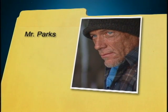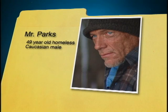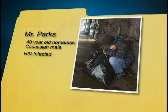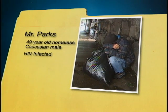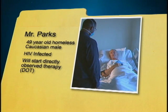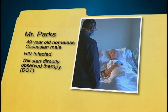Walter was assigned two new cases. Mr. Parks is a 49-year-old homeless Caucasian man who was identified just two days ago. He is now being treated for TB at St. Vincent's Hospital and has agreed to participate in Directly Observed Therapy, or DOT, when discharged. He is HIV infected and lived under a bridge before entering the hospital.